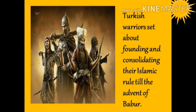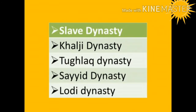In this lesson we discuss how Turkish warriors set about founding and consolidating their Islamic rule till the advent of Babur. The five dynasties covered are: the Slave dynasty, Khalji dynasty, Tughluq dynasty, Sayyid dynasty, and Lodi dynasty.